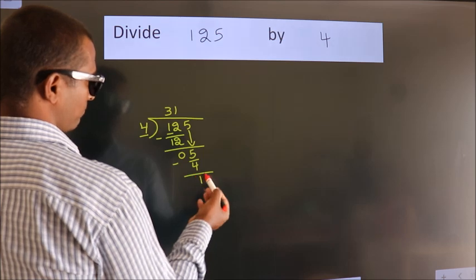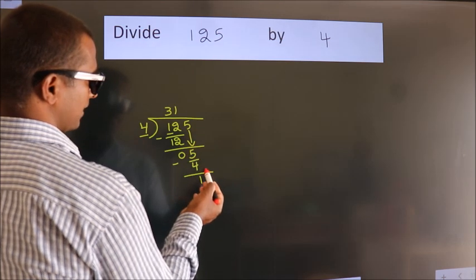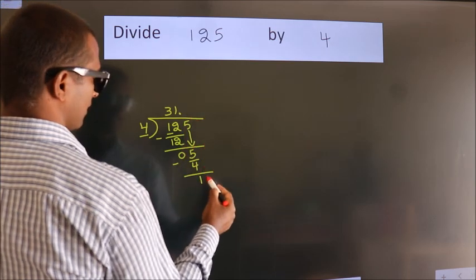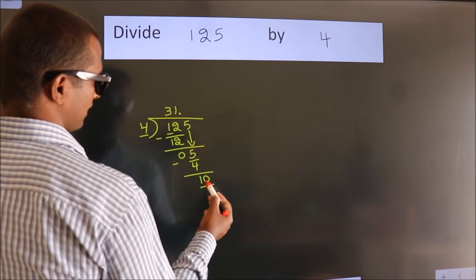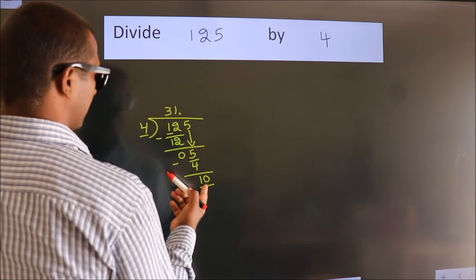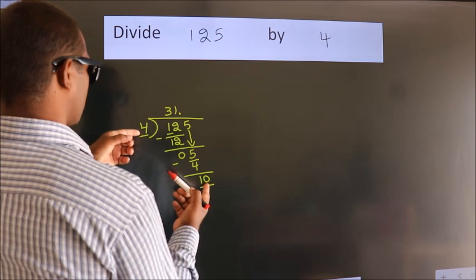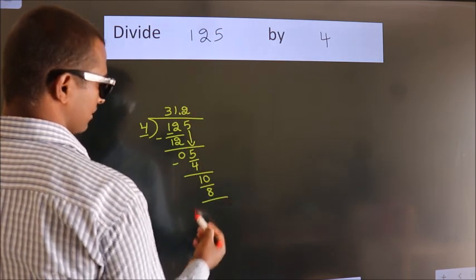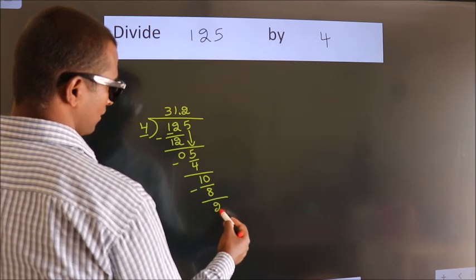After this, no more numbers to bring down. So what we do is, we put a dot and take 0. So 10. A number close to 10 in the 4 table is 4 twos, 8. Now we subtract. We get 2.